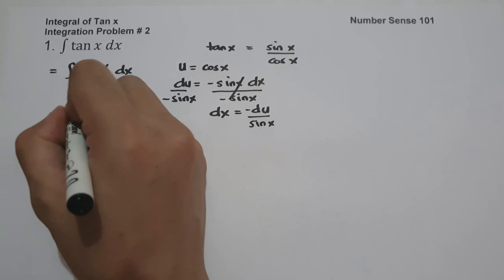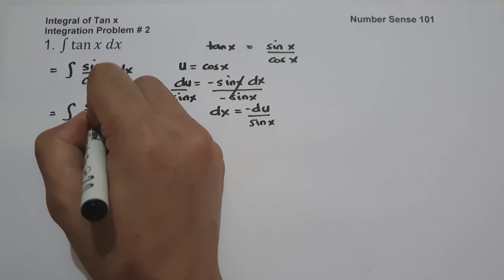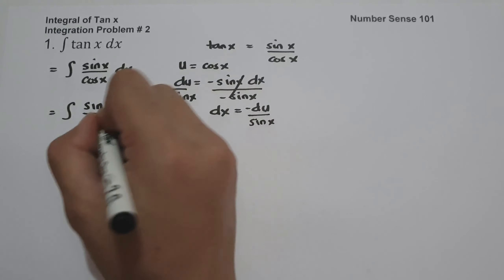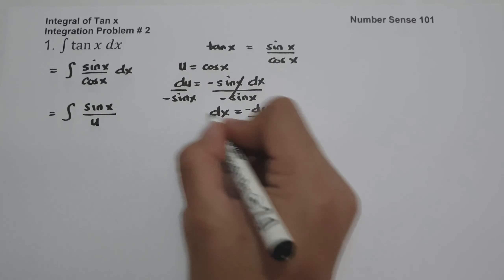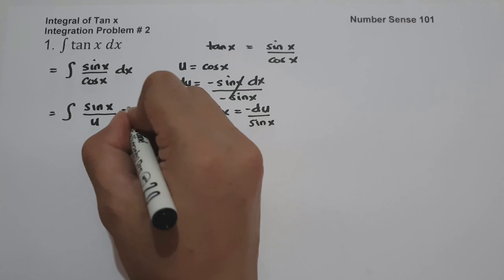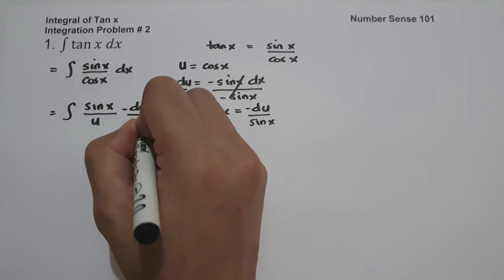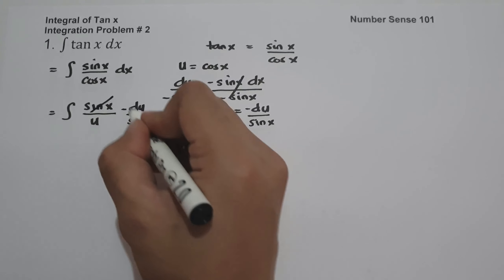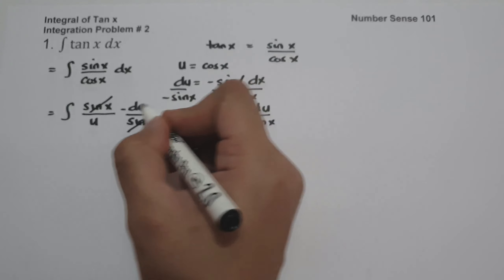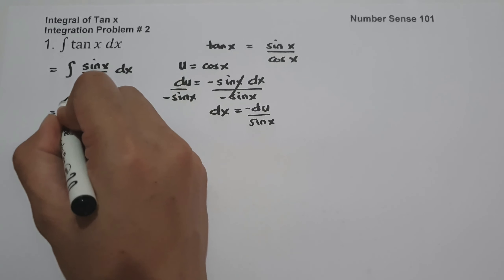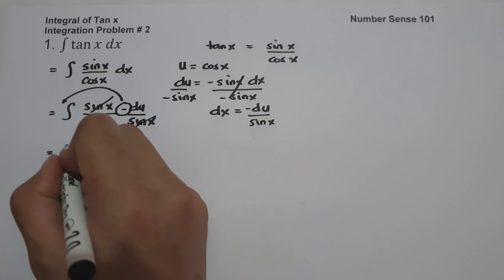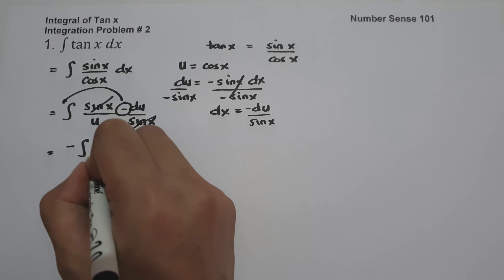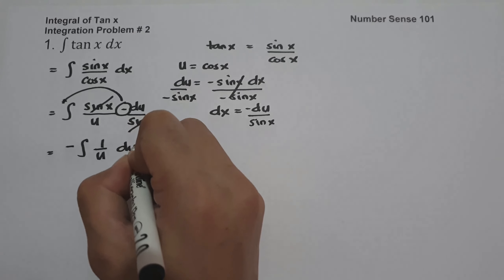So let us have the antiderivative of sine x over cosine x — that is u — and dx, which is negative du over sine x. We can cancel sine x and move the negative sign in front. So this will be negative antiderivative of 1 over u du.